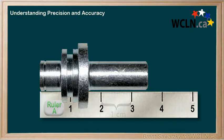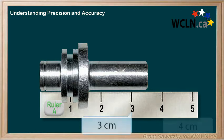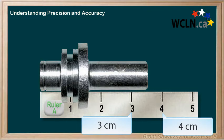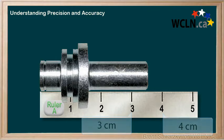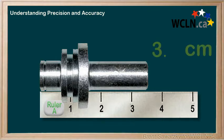We can determine that this part is between three centimeters and four centimeters — for sure, we know that. So we'll report a three, and we're certain about this three. We can mark it as a certain digit.